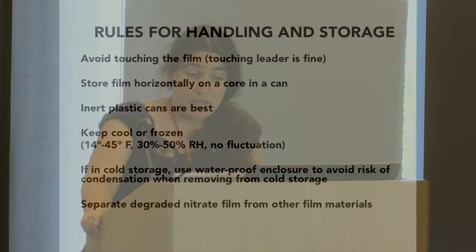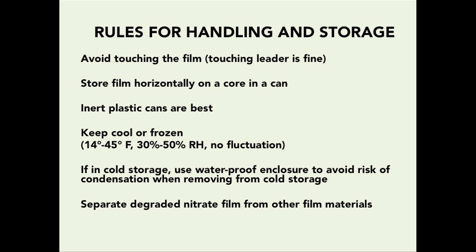General rules for handling and storage of film: avoid touching the film itself — most film will have a plastic leader strip attached to the end for handling. Store film horizontally on a core in a can, ideally an inert plastic can with no chemical reaction to the film. Keep film cool or frozen — the best range is 14 to 45 degrees Fahrenheit, 30 to 50 percent humidity. Use a waterproof enclosure for cold storage to prevent condensation damage when it comes out. Degraded nitrate film must be separated from other film materials, especially other nitrate, because the chemical deterioration will spread from film to film.